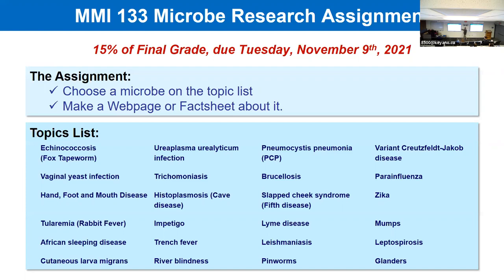First, make sure you pick something off the list. If you pick something not off the list, I can't guarantee I'll agree to your assignment. I do not like to have the same topics every year, just to sort of prevent plagiarism. There are other topics that are acceptable, but I need to approve them because some things just don't work out very well for this kind of assignment.